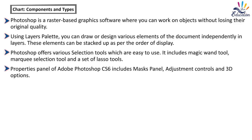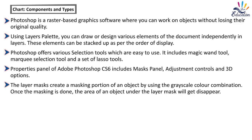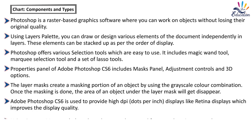The Properties panel of Adobe Photoshop CS6 includes masks panel, adjustment controls, and 3D options. The layer masks create a masking portion of an object using grayscale color combination. Once the masking is done, the area of an object under the layer mask will disappear. Adobe Photoshop CS6 is also used to provide high DPI (dots per inch) displays like Retina displays, which improves the display quality.